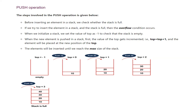Let us see an example. Initially top equals minus 1, indicating the stack is empty. Push 10: increment top to 0, insert 10. Push 20: top becomes 1, insert 20. Push 30: top becomes 2, insert 30. Push 40: top becomes 3, insert 40. Now the stack is full.